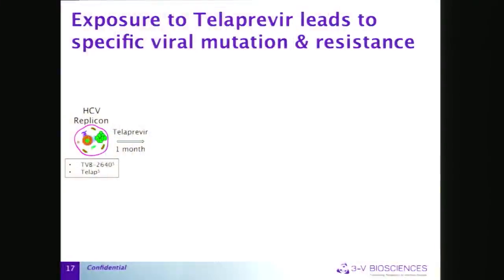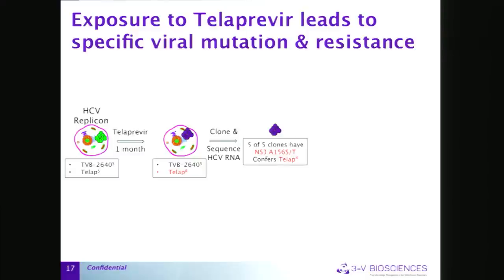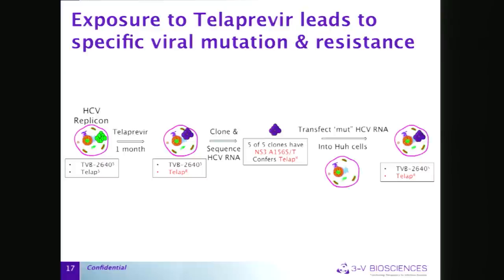We treat resistant viruses — but do we make resistant viruses? As a control, we exposed replicon cells to telaprevir for a month, got colonies, cloned and sequenced them. In five of five clones, we found an A156 serine or threonine change — the canonical telaprevir resistance mutation. When we exposed replicons to TVB2640 for a month, we also got resistant cells, which as expected remain sensitive to telaprevir. We sequenced the HCV RNA from five to six independent clones — it's an RNA virus with changes throughout, but there is not a single common change in any replicon, including at palmitylation sites. No evidence of HCV genetic change.